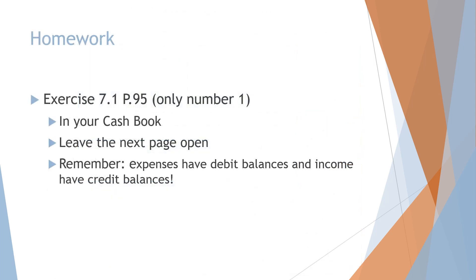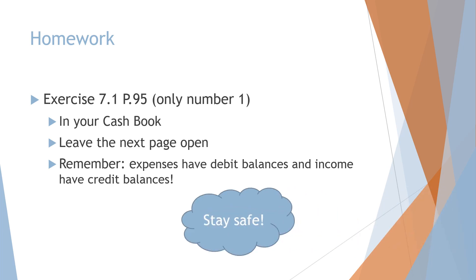Homework for your next lesson: Exercise 7.1, page 95 in your textbook, number one only. Complete this in your cashbook and leave the next page open. Remember: expenses have debit balances and income have credit balances. Stay safe.